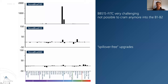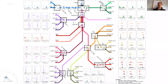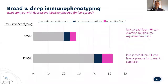Where you're not seeing any change in spread, you have spillover-free upgrades — exactly what customers are doing now. This takes us to a new place where you could design a panel with several more markers you want, and now you can actually do that. Across the other yellow-green dyes, you see marginal spillover changes in the labels they replace in conventional cytometry — increases present but they can still be used together, as we'll show in the 45-color data.